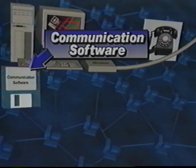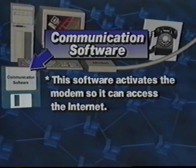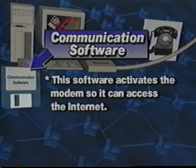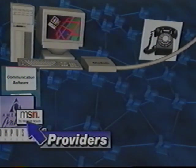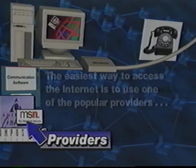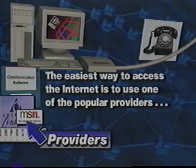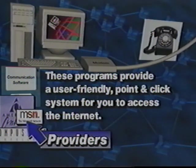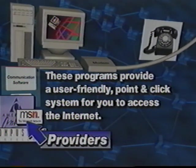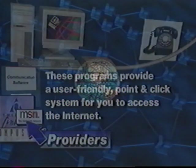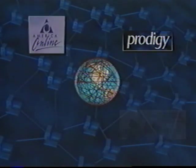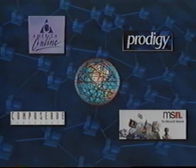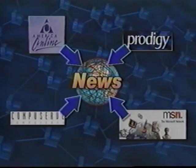Communication software is the next requirement. This software activates the modem, and it's often supplied along with it. The Windows program has its own communication program, and some Internet service providers have their own communication software. There are several ways to access the Internet, and the easiest is to use one of the most popular providers, such as AOL, Prodigy, CompuServe, or Microsoft Network. These programs are geared to provide very user-friendly point-and-click systems for you to access the Internet, as well as many other areas of interest in that particular program.